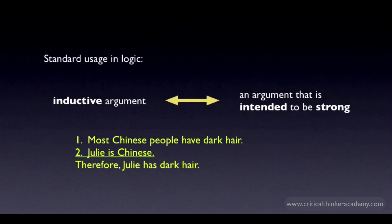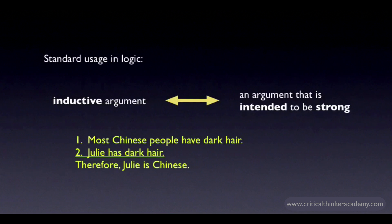But as with deductive arguments, we want to be able to talk about failed inductive arguments — arguments that are intended to be strong but are in fact weak. Like this one. Here, we're supposed to infer that simply because Julie has dark hair, she's probably Chinese. This is a weak argument. But we still want to call it an inductive argument if the intention was for it to be strong. In this case, the word 'most' indicates that the inference is intended to be strong rather than valid. So we would call this a weak inductive argument.